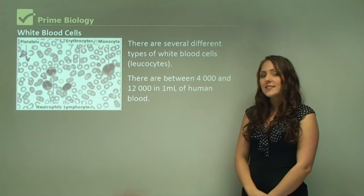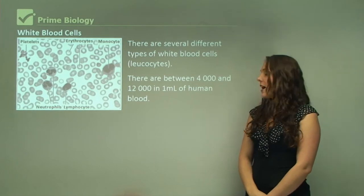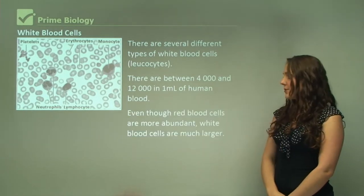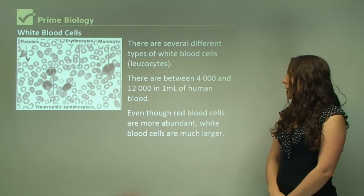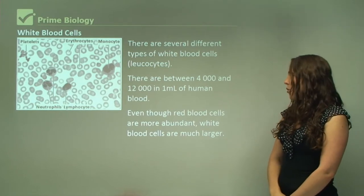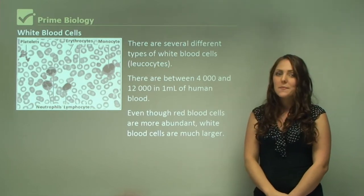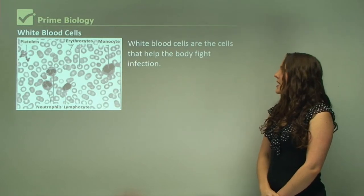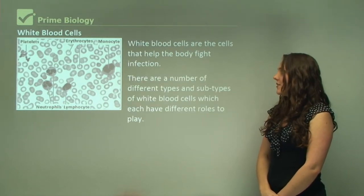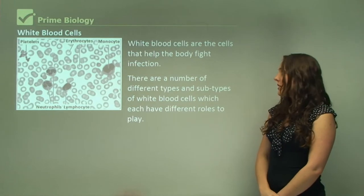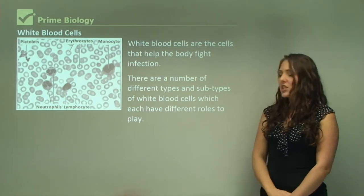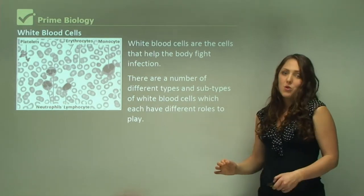There are between 4,000 and 12,000 white blood cells in one milliliter of human blood. Even though red blood cells are more abundant, white blood cells are much larger. White blood cells are the cells that help the body fight infection. There are a number of different types and subtypes of white blood cells, each with different roles within the body.